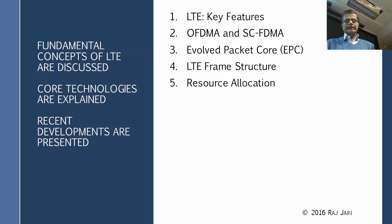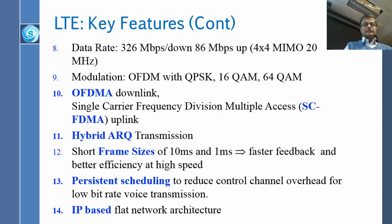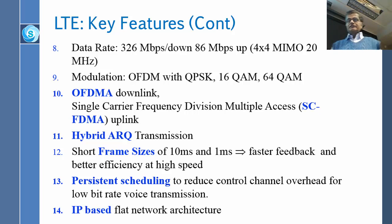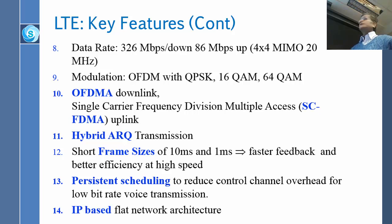We are in LTE, talking about LTE features — new features. We already talked about two or three of these, but I will go back again. The data rate is 326 megabits down, quite a bit up from whatever we had in 3G. However, this is with 4 by 4 MIMO and 20 megahertz. The modulation goes all the way up to 64 QAM — that's another improvement, and that's how you get all these high rates.